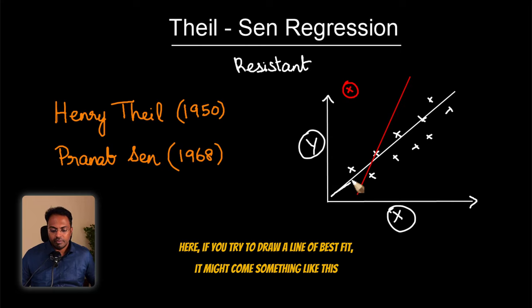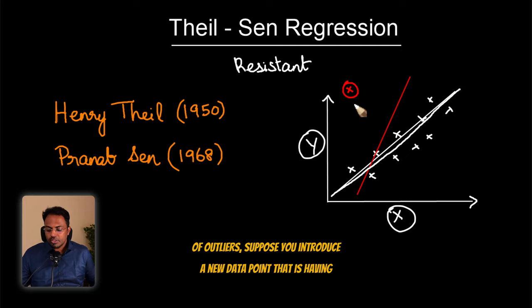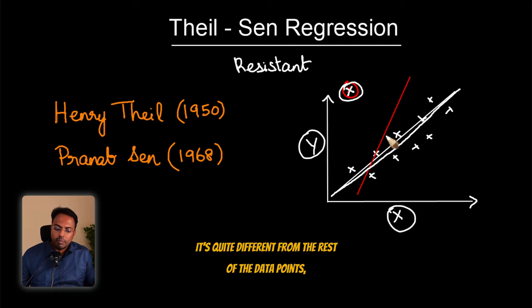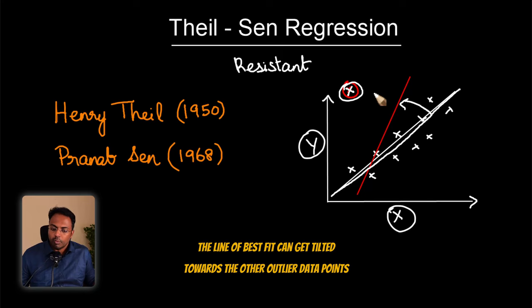Now the problem is in the presence of outliers. Suppose you introduce a new data point that is quite different from the rest of the data points. The line of best fit can get tilted towards the outlier data points. So linear regression is extremely sensitive to outliers, we don't want this behavior.